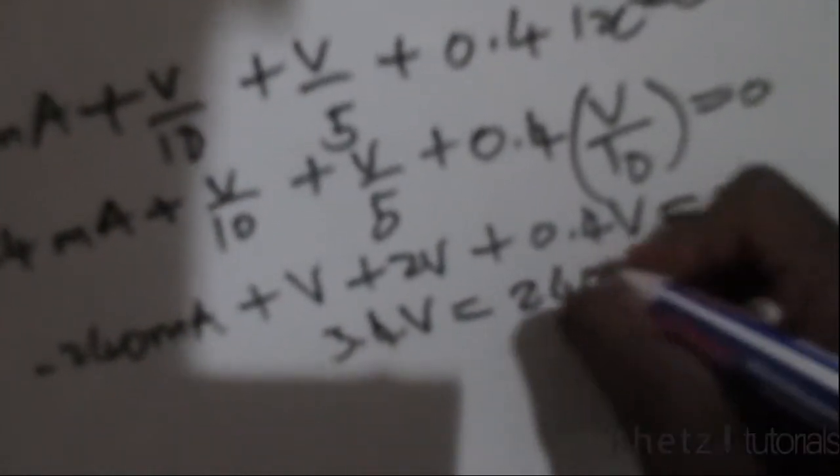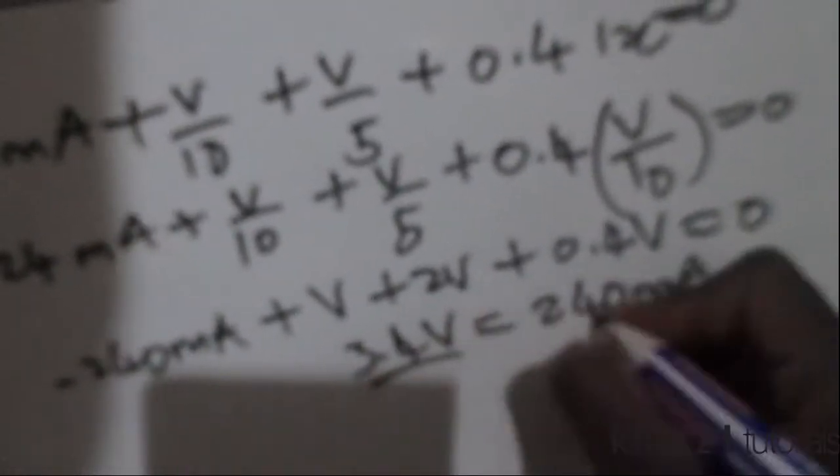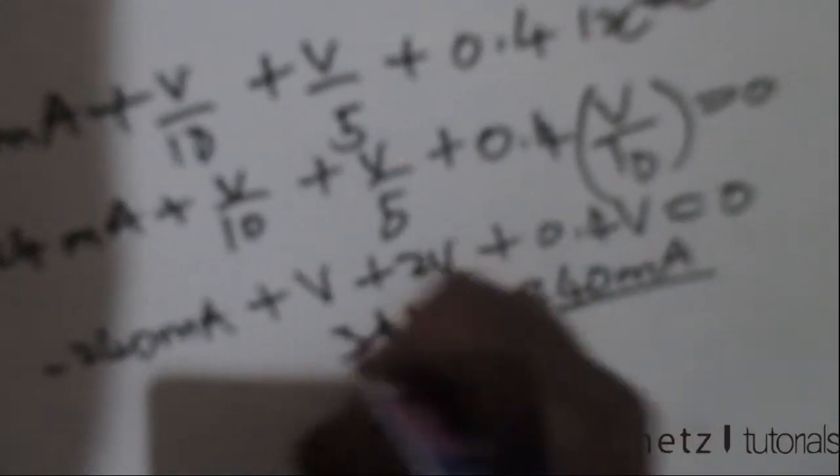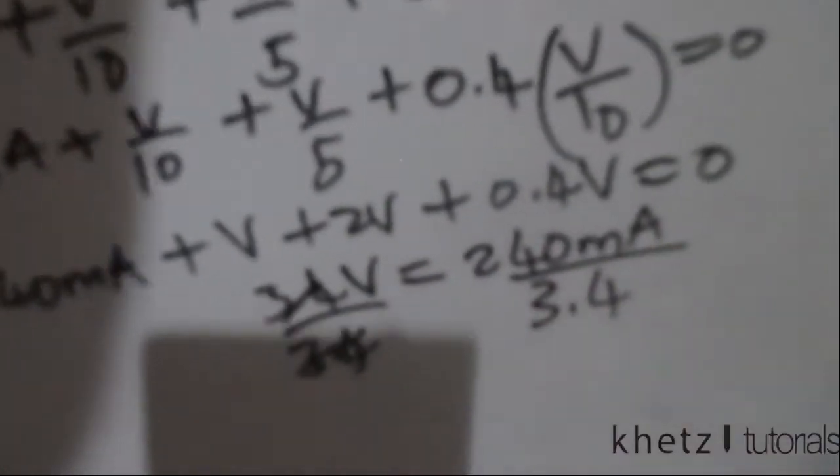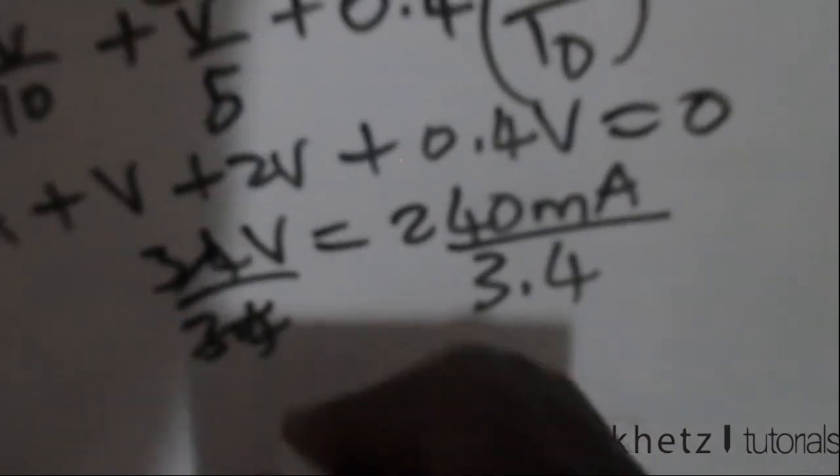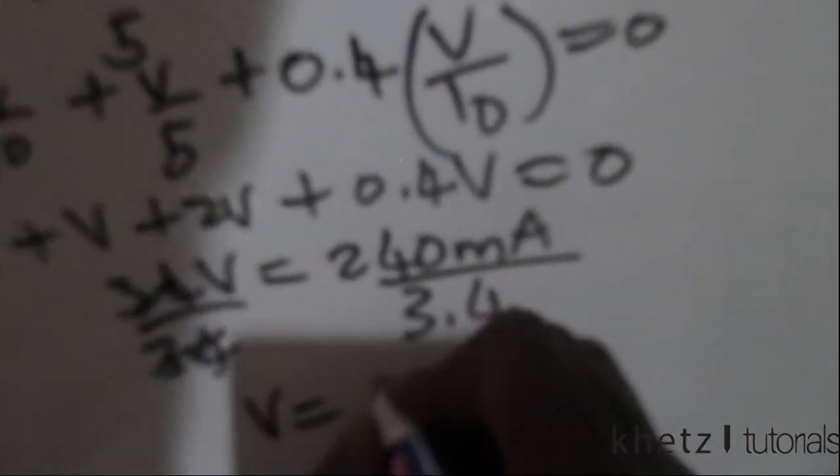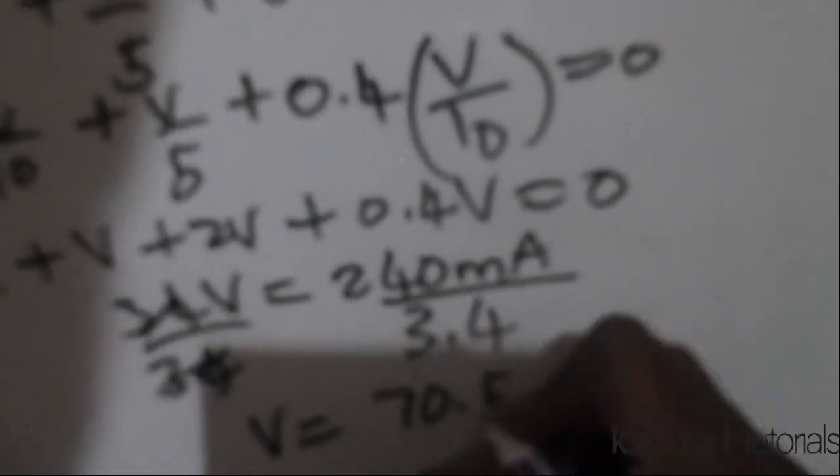And now dividing both sides by 3.4, we are actually going to find v to be 70.588 × 10^-3 volts.